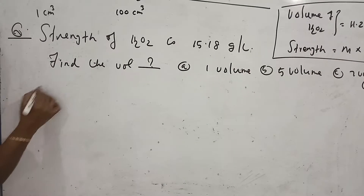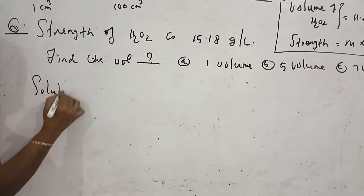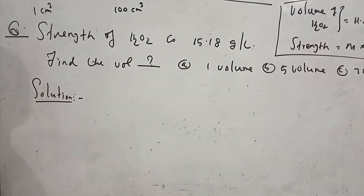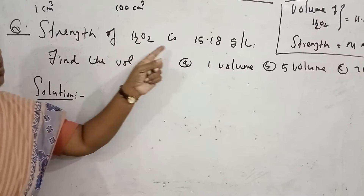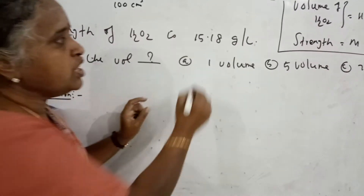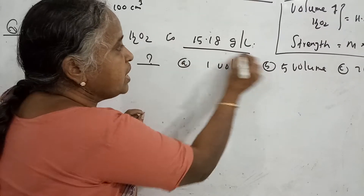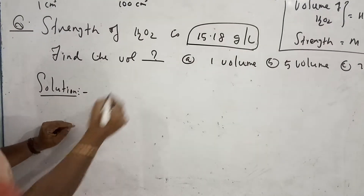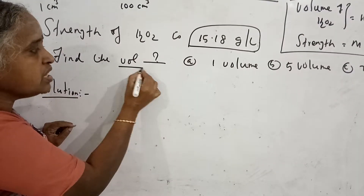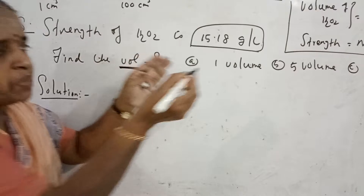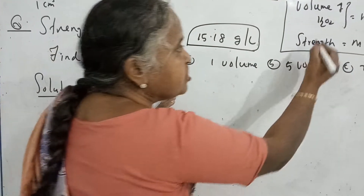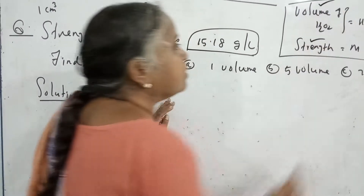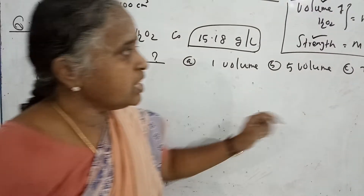Now let us see the solution. I am reading the question. Strength of hydrogen peroxide is 15.19 grams per liter. What they are asking is: find the volume. So, apply the formula. Strength is given; they are asking the volume.